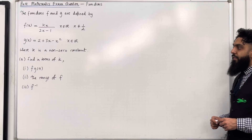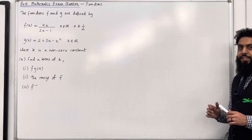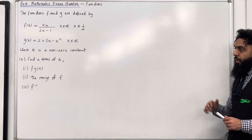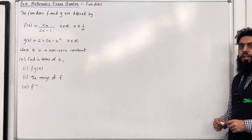Part A, find in terms of k, part 1: f of g of 4. Please pause the video, have a go at part 1, and once you've got your complete solution then play the video.